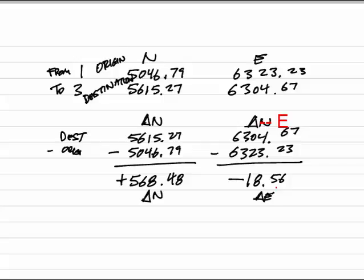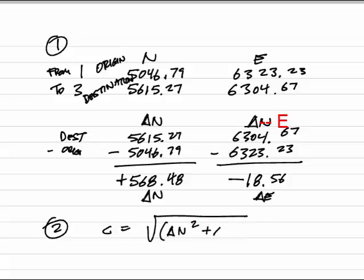Step two says I can determine the length between these points. Determine the length between point 1 and 3 using the change in northing and the change in easting. The distance, the hypotenuse of the right triangle, is simply going to be this value squared, change in northing squared plus the change in easting squared. Take the square root of that sum.